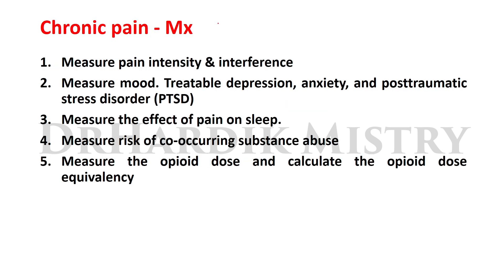For the management of acute pain: use analgesics such as NSAIDs or opioids, and treat the underlying cause. For chronic pain management, you must measure pain intensity and interference, assess mood for treatable conditions such as depression, anxiety, and PTSD, measure the effect of pain on sleep, assess the risk of co-occurring substance abuse, and measure and calculate the opioid dose equivalency.